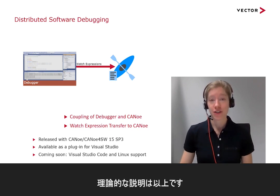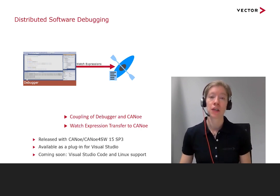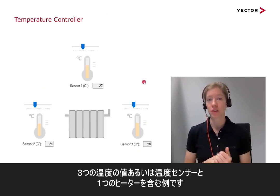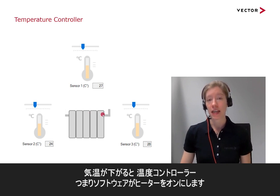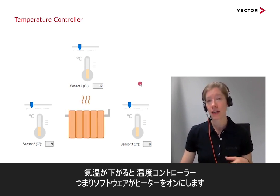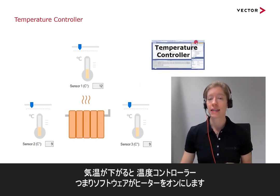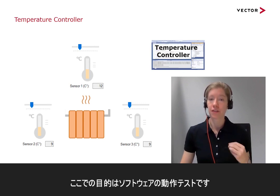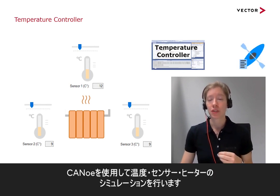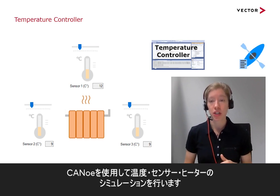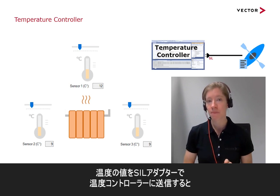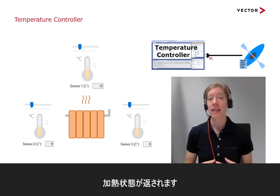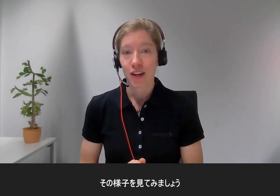Let me show you the feature in an example. I have three temperature sensors and a heater. Whenever it gets colder, the heater should turn on, and that's done by a temperature controller — that's my software. I want to test if it's working correctly using Canoo, where I simulate the temperatures, the sensors, and the heater. The temperature values are transferred to my temperature controller over a software-in-the-loop adapter, and the temperature controller then transfers the heating state back.